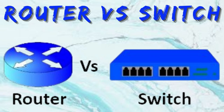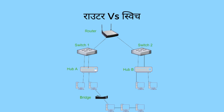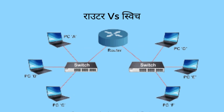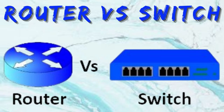A router connects different networks together, whereas a switch connects multiple devices together to create a network. Router operates on a physical layer, a data link layer, as well as the network layer, whereas a switch operates only on the data link layer and network layer.